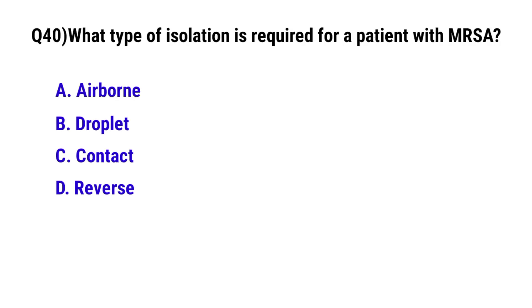Question number 40: Which type of isolation is required for a patient with MRSA? The correct option is C: Contact precautions.